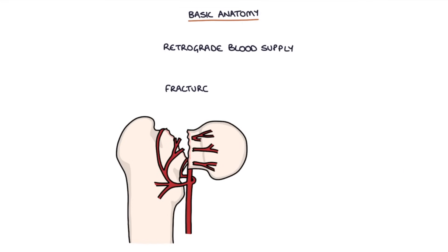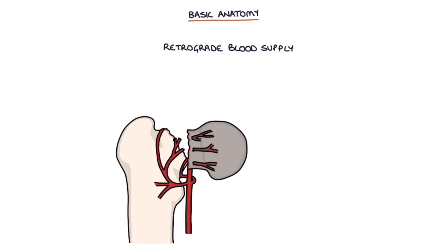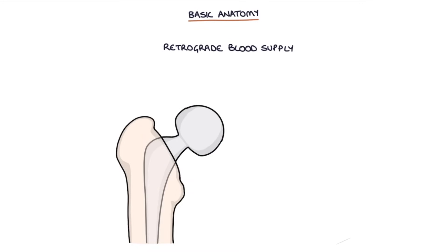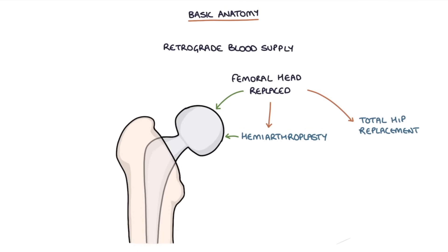A fracture of the intracapsular neck of the femur, within the capsule, can damage these blood vessels, removing the blood supply to the femoral head and leading to avascular necrosis. Therefore, patients with a displaced intracapsular fracture need to have the femoral head replaced with a hemiarthroplasty or a total hip replacement.